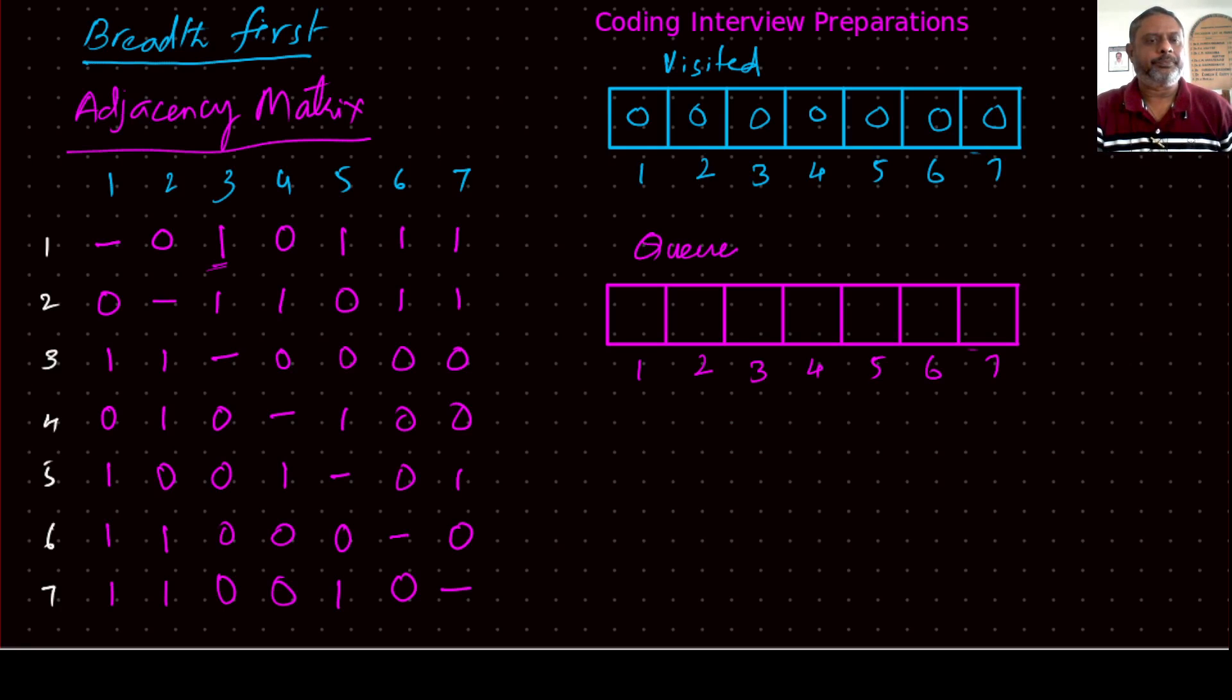So node one, we begin with node one and then see what all are adjacent to node one. From node one you can see three is adjacent, five is adjacent, six is adjacent, seven is adjacent. So three, five, six, seven come to the queue.